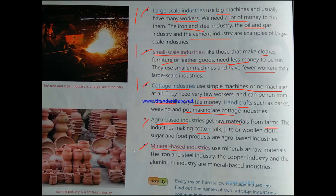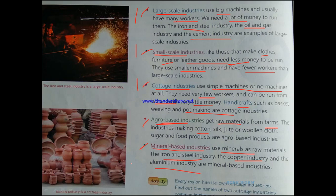Next we have mineral-based industries. Mineral-based industries use minerals as raw materials. The iron and steel industry, the copper industry and the aluminium industry are mineral-based industries. According to the use of raw materials, industries can be divided into two types: agro-based industries and mineral-based industries. Mineral-based industries are those which use minerals such as gold, silver, iron as their raw material. Iron, copper and aluminium are all minerals, and they are used to make products. So these industries are known as mineral-based industries.